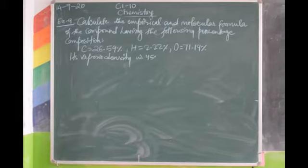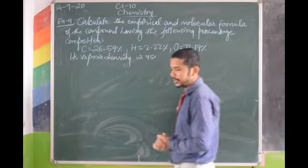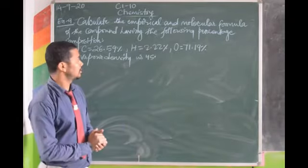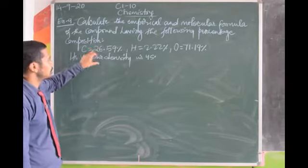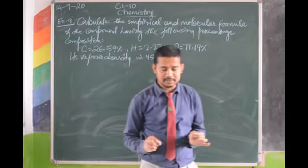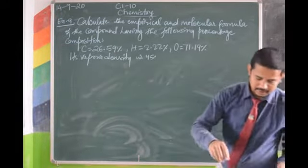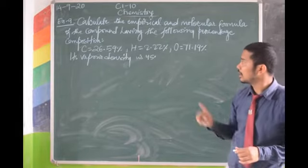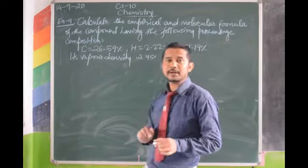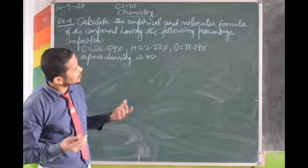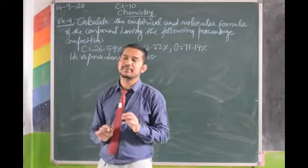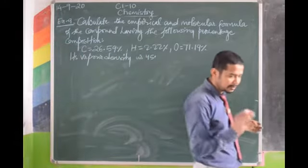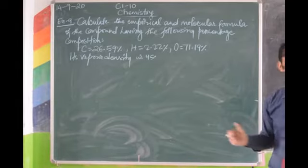Calculate the empirical formula and molecular formula of a compound having the following percentage composition. Percentage composition is given. First find empirical formula, then molecular formula. Before doing this, make a table with 5 columns: element, percentage composition, atomic weight, ratio of atoms, and simplest ratio.